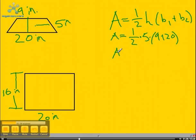Once we multiply those out and add the 9 and the 20, we come up with 2.5 times 29. And when you multiply those, you get an area of 72.5 inches squared for the trapezoid.